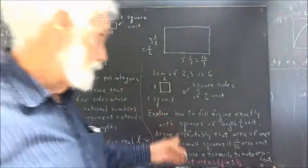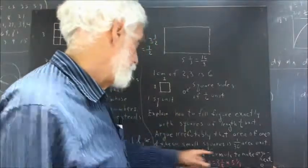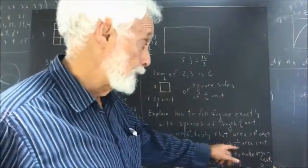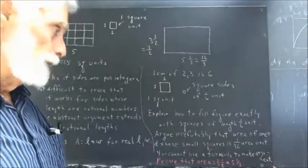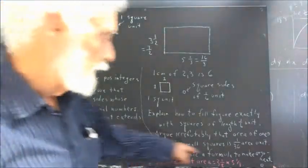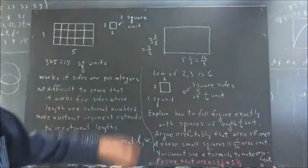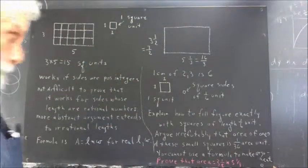You're going to have to give me a geometric argument that the area of one of these small squares is one-thirty-sixth of an area unit. Once you have that, then I note you can't use the formula to make this argument. That would be circular. You'd be using the formula to prove the formula.